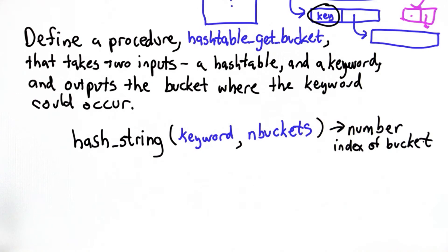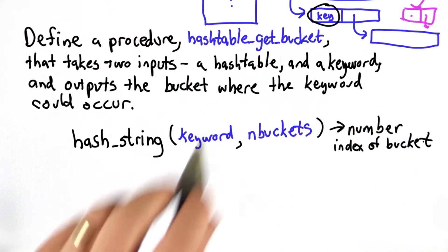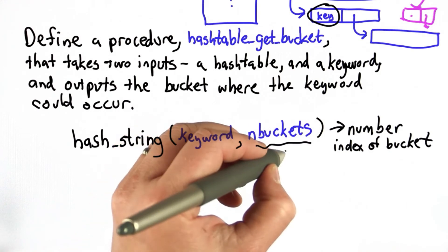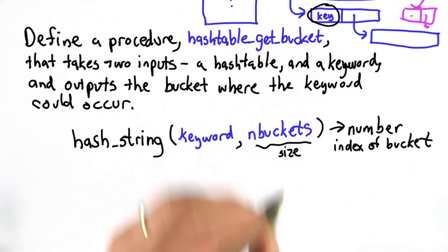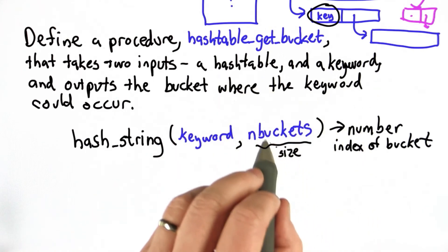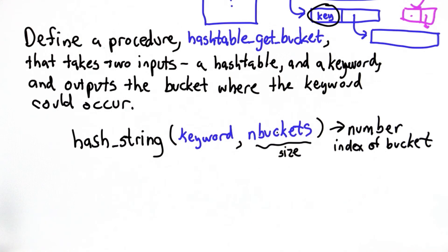There's a bit of a mismatch here that you'll have to think about to define hashtable_get_bucket. hash_string's input is the size, the number of buckets, which is a number. The two inputs to hashtable_get_bucket are just a hash table and a keyword. So you need to figure out how to get the size of the hash table to pass into hash_string.